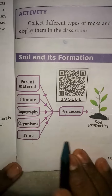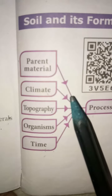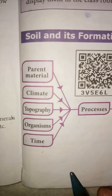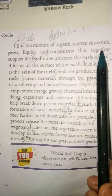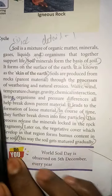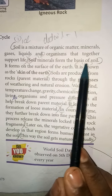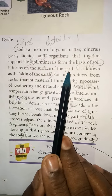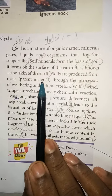The processes of soil formation depend on parent material, climate, topography, organisms and time. Soil is a mixture of organic matter, minerals, gases, liquids and organisms that together support life. Soil mineral forms the basis of soil. It forms on the surface of the earth, so soil is known as the skin of the earth.